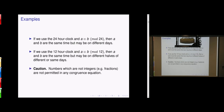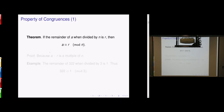One remark: when we talk about congruence, we talk about integers only — not fractions or irrational numbers. There are some simple properties of congruences. The theorem says: if the remainder of a when divided by n is r, then a is congruent to r modulo n. The reason is simple: because a minus r is a multiple of n. If you write a as n times q plus r, then a minus r equals q times n.